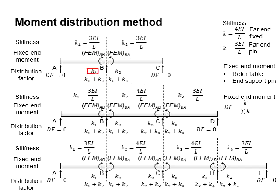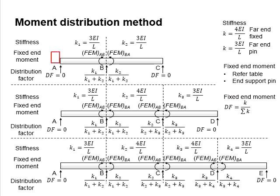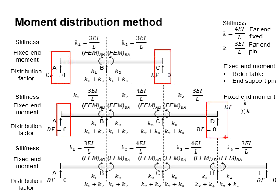The larger the stiffness weightage, the more moment a segment carries. The summation of both distribution factors should equal the total moment to be taken at the joint. As the end supports are normally assumed to be pinned, there won't be any moment carried by the end support, so the distribution factor at end supports is equal to zero.